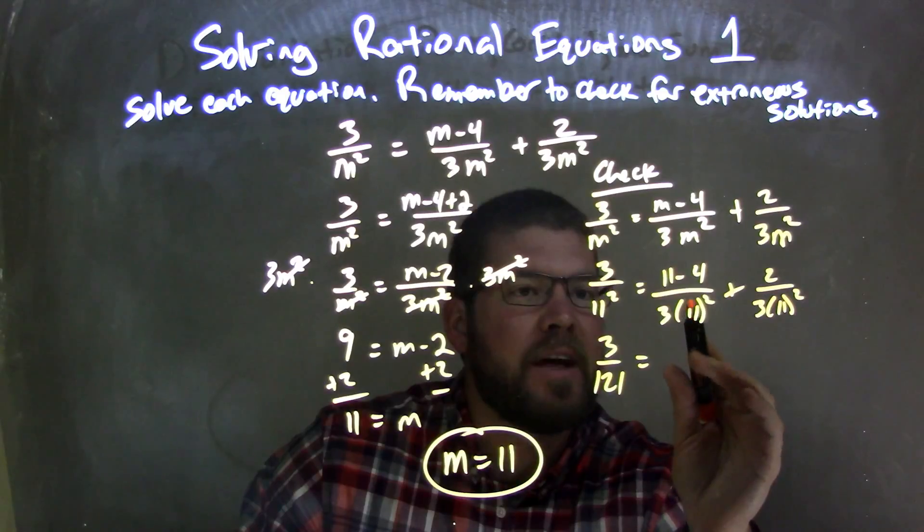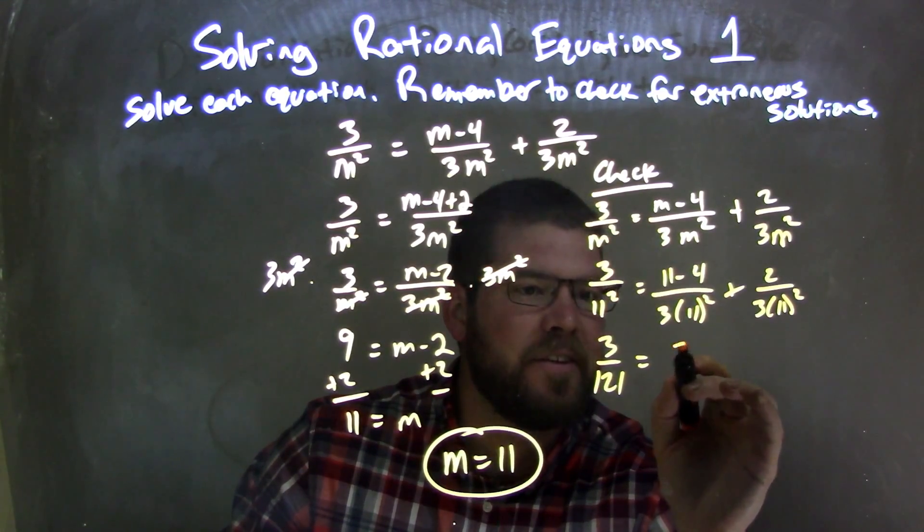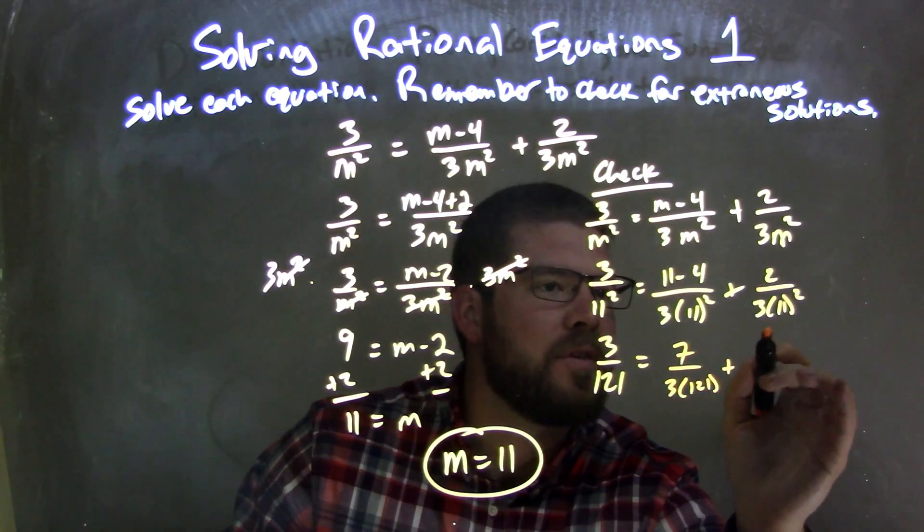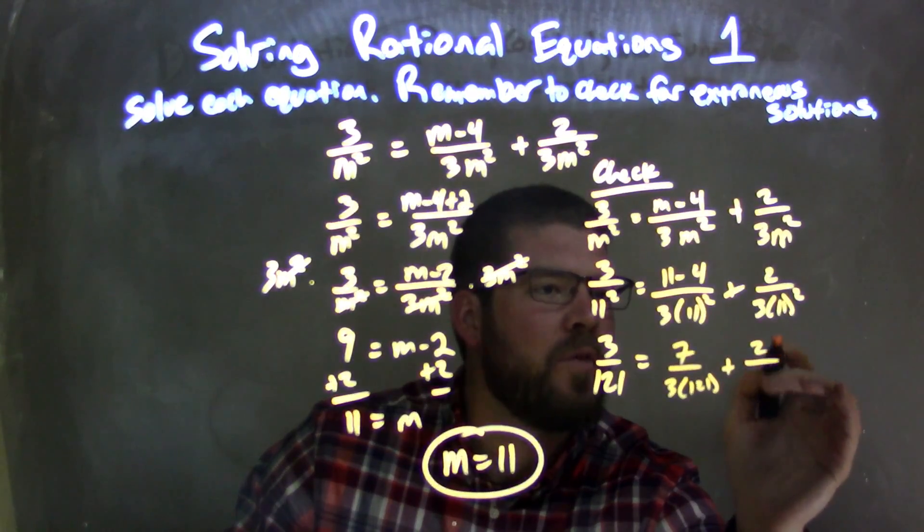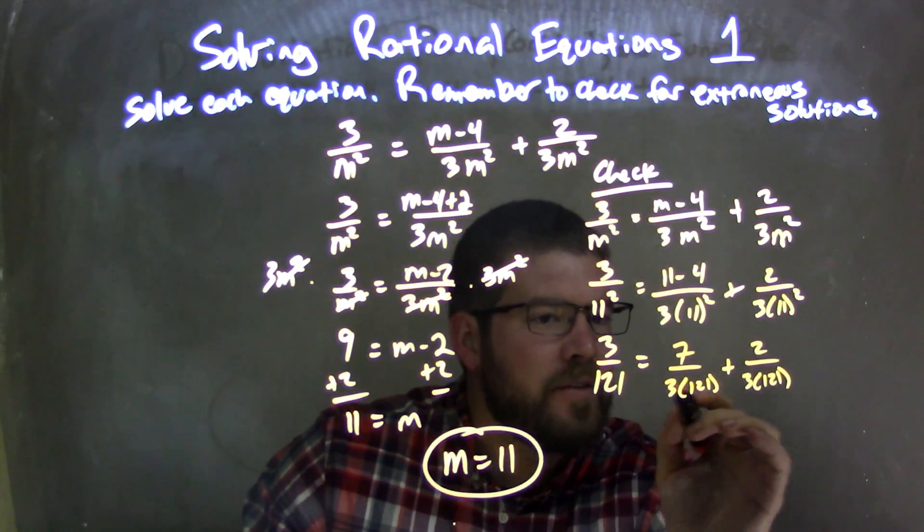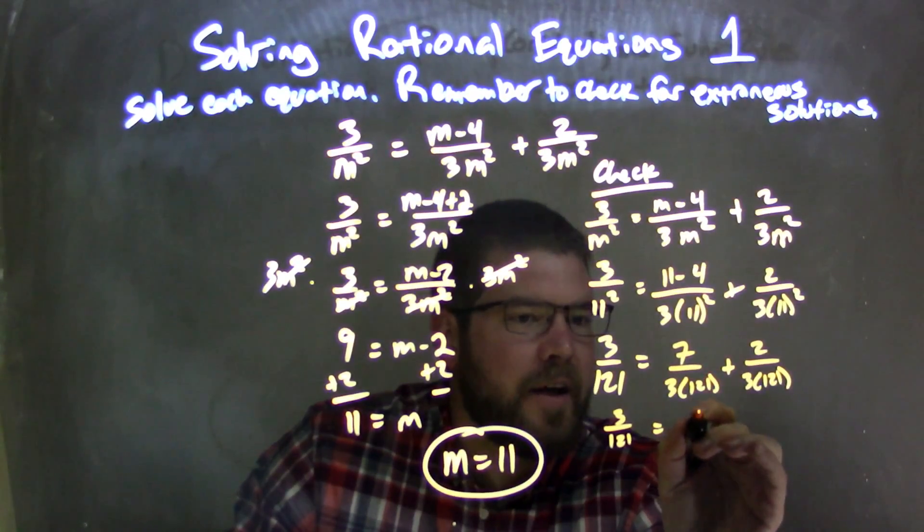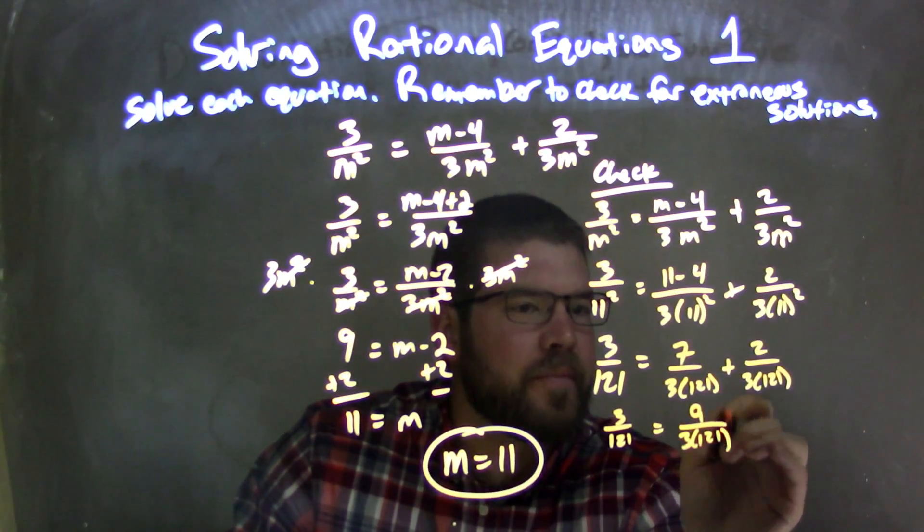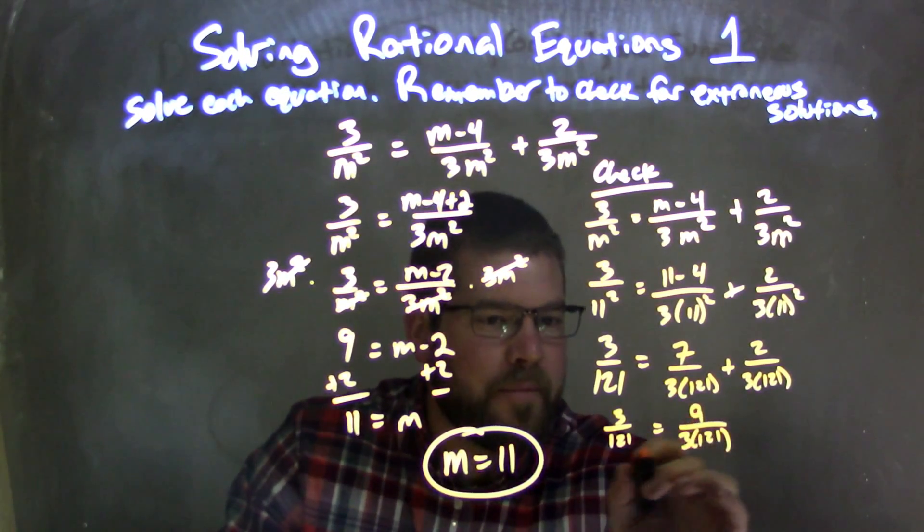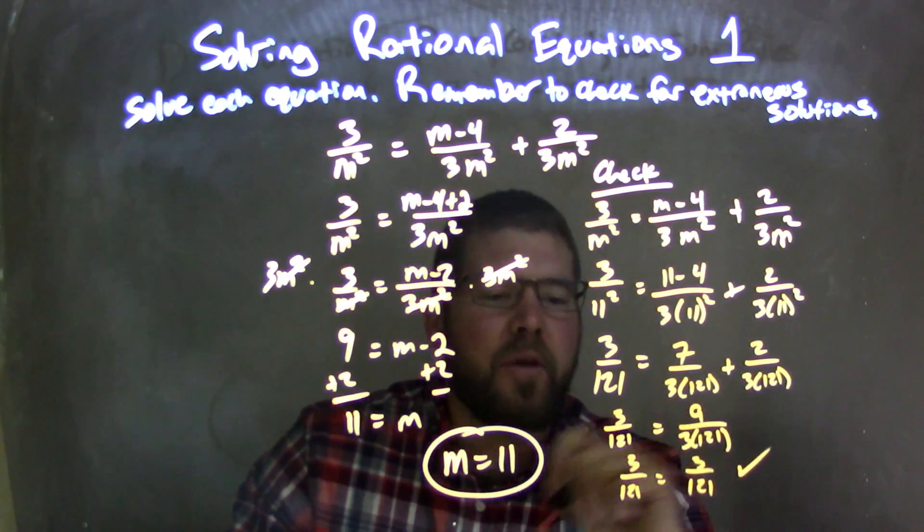So now we have 11 minus 4, which is 7, right? 7 over 3 times 121 plus 2 over 3 times 121. Now these have the same base, we can combine them together. 3 over 121 equals 9 over 3 times 121, right? 7 plus 2 is 9. And then from there, 9 divided by 3 comes out to be 3 up top. So we have 3 over 121 equals 3 over 121. They're equal.